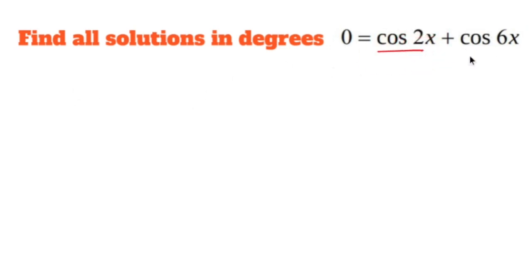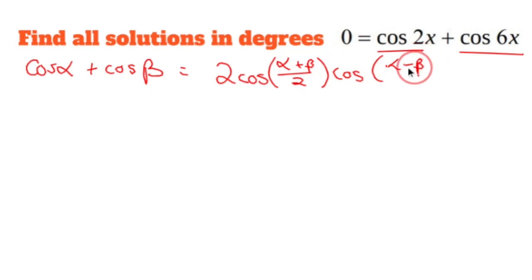So I have to find a way to add these. Well, I wonder if there's a trig identity that will do just that. Good news, there is. Cosine alpha, or in this case alpha would be 2x, plus cos beta, 6x, has an identity, and it's 2 cos of alpha plus beta over 2, times cosine of alpha minus beta over 2.